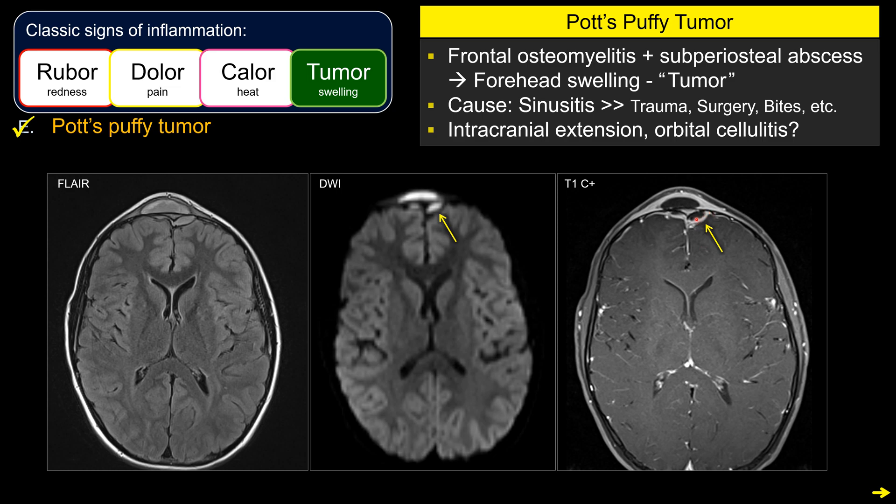When you see a Pott's puffy tumor, make sure you look for intracranial extension. Make sure there is no epidural abscess, and make sure there is no venous sinus thrombosis, as it is adjacent to the superior sagittal sinus. Also, inferiorly, make sure that bad sinusitis — especially involving the ethmoid air cells — does not have involvement of post-septal orbital cellulitis.